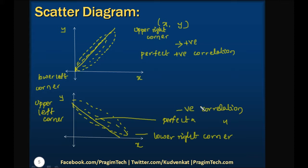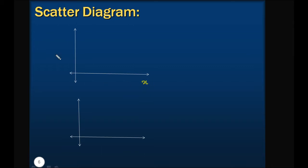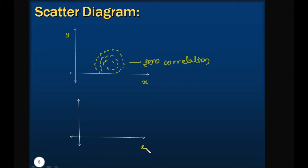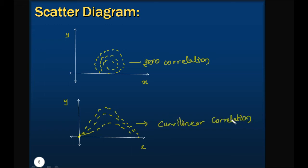Let us look into two more types of correlation. If after plotting the graph the points are scattered randomly in the XY plane, then it is called zero correlation. Whereas if the plotted XY points form a curve, then we can say that it is a curvilinear correlation. So by using a scatter diagram we are able to identify the direction of correlation, whereas we cannot find out the magnitude of correlation. In order to find out the magnitude of correlation, we will use other methods.